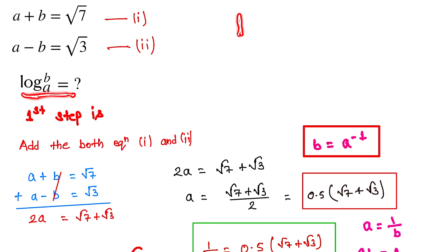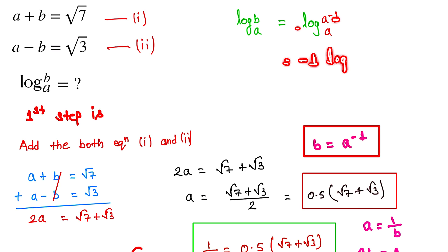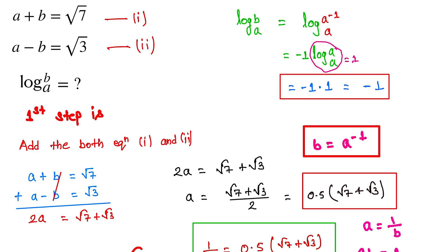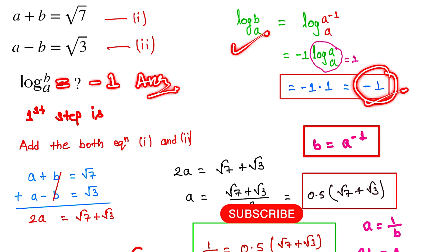We have to find log b base a. We substitute b equals a inverse, so we need log of a inverse base a. Using the power rule, the exponent minus 1 comes out front, giving minus 1 times log a base a. Since the base and argument are equal, log a base a equals 1. So the answer is minus 1 times 1 equals minus 1. The value of log b base a is equal to minus 1, and this is our final answer. Thank you so much for watching. If you like the video, please subscribe to our channel and share it with your friends.